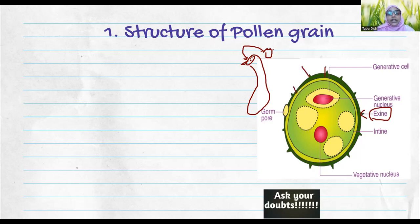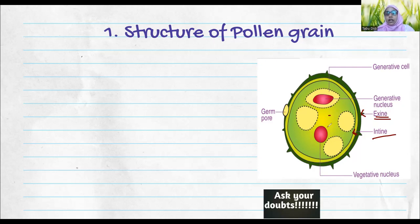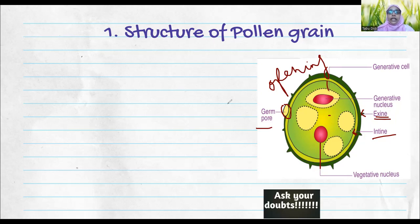Another function of the exine having these spiny structures is protection from adverse environmental conditions — intense or harsh external physical conditions. The spines also play a role in that protection. The outer layer is mostly dead. The living inner layer is the intine. Inside you will see the cytoplasm, and you will see two nuclei — one vegetative nucleus and one generative nucleus. There is also a small opening known as the germ pore. This is how a typical pollen grain structure will look like.